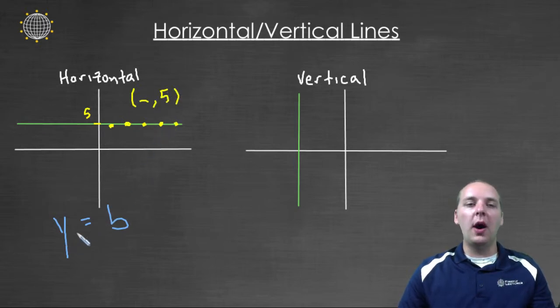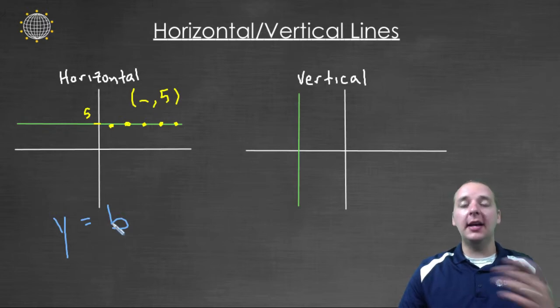So that's why it's y equals just whatever that constant is. And then x can be whatever it wants, but the y value is going to be five.